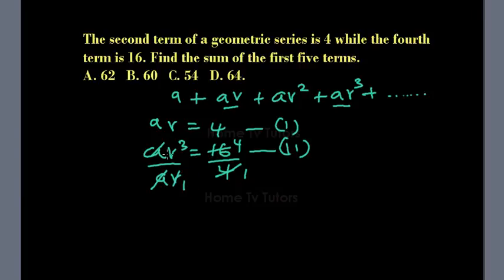r cancels one out, so we have r². So r² equals 4. Square root both sides, we now have square root of 4, which equals 2. So r is 2.